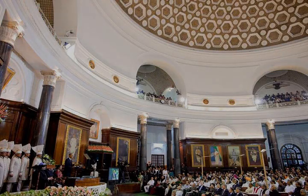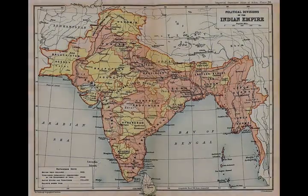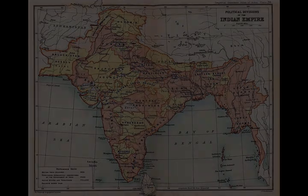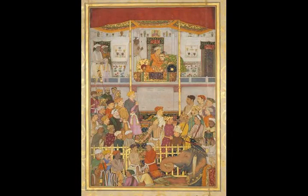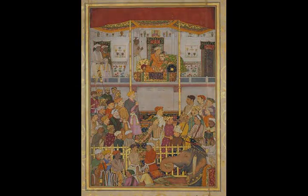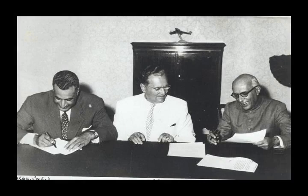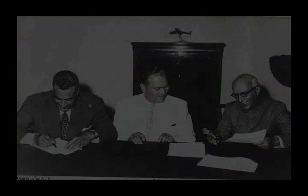India has a three-tier unitary independent judiciary comprising the Supreme Court, headed by the Chief Justice of India, 25 high courts, and a large number of trial courts. The Supreme Court has original jurisdiction over cases involving fundamental rights and over disputes between states and the centre, and has appellate jurisdiction over the high courts. It has the power to both strike down union or state laws which contravene the constitution, and invalidate any government action it deems unconstitutional.